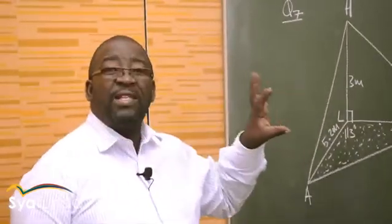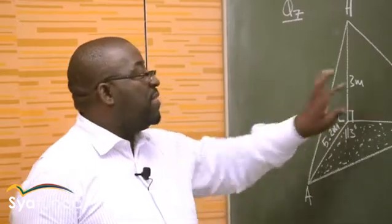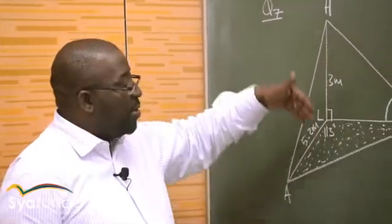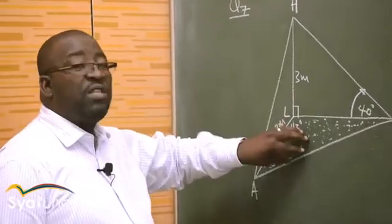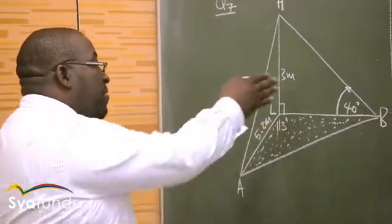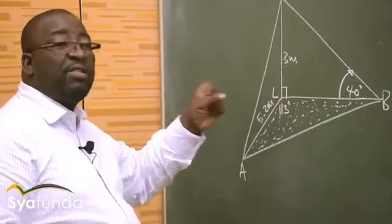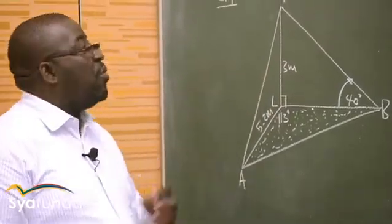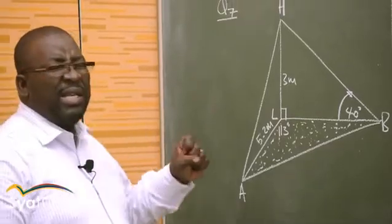We must be able to see the three dimensions that we see here. This is the front view, this is the side view, and this is the bottom view. When you're looking at this diagram from the top, you'll see this triangle. When you're looking at it from the front, you'll see a particular triangle. When you look at it from the side, you'll see another triangle. We refer to these problems as 3D at times.